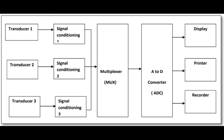The multiplexed data is converted into a digital signal with the help of an analog-to-digital converter. The converted digital signals are fed to the computer for further processing, mathematical computation, storage, etc.